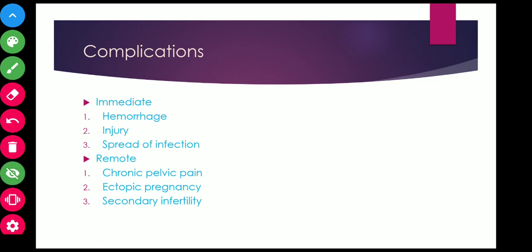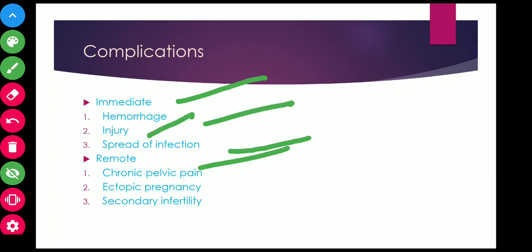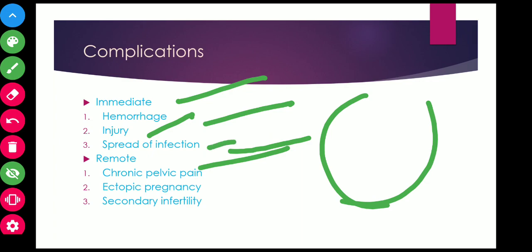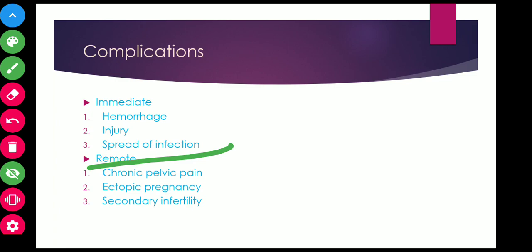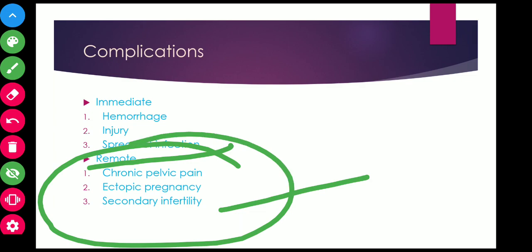Complications are divided into immediate and remote. Immediate complications include hemorrhage, injury, and spread of infection. Hemorrhage is related to the abortion process; injury involves the uterine wall during surgery; and spread of infection can lead to generalized peritonitis in Grade 3, endotoxic shock, and acute renal failure. Remote complications include chronic pelvic pain, ectopic pregnancy, secondary infertility, and severe emotional depression.